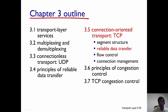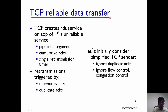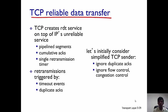In this video we will talk about reliable data transfer using TCP. TCP creates a reliable data transfer service on top of IP's unreliable service, and it achieves this by using pipelined segments, cumulative acknowledgements, and a single retransmission timer.